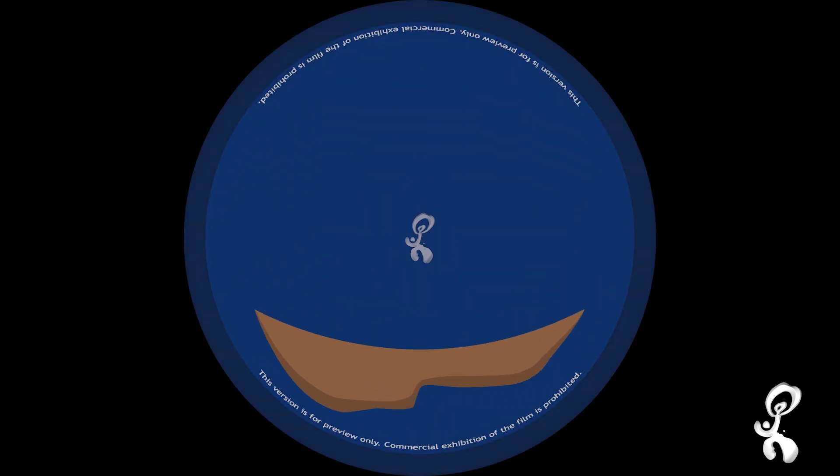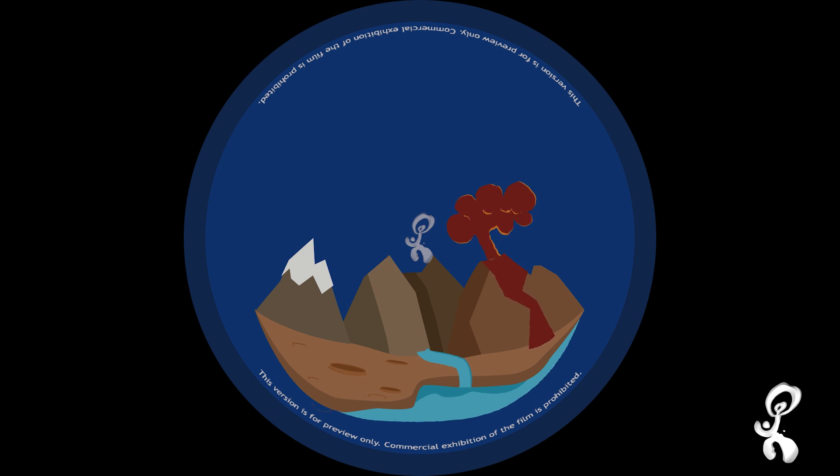Terrestrial planets always have land, lots of mountains, volcanoes, craters and sometimes water. Mercury, Venus, Earth and Mars are the terrestrial planets.